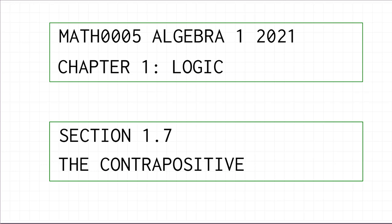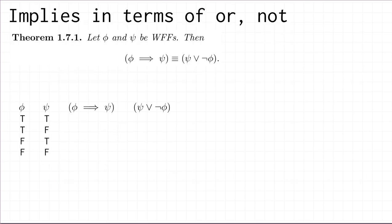In this video I'm going to talk about some useful logical equivalences involving the connective implies. The first of these allows us to express implications in terms of the connectives OR and NOT.